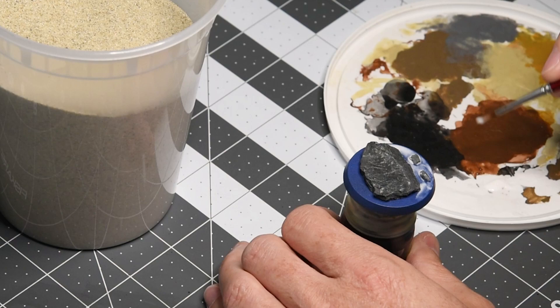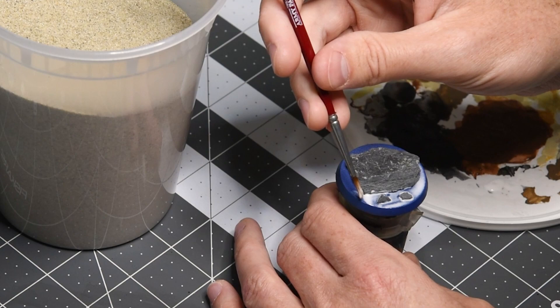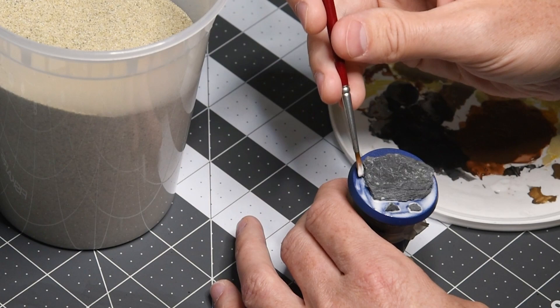You'll probably also notice that there are rocks attached to the base already. And this is just slate. Slate can be found really anywhere. It's used for a variety of things including different hobbies. And I'll again include a link in the description for the exact slate I used.